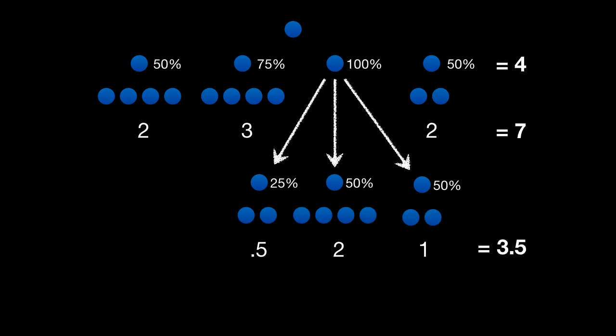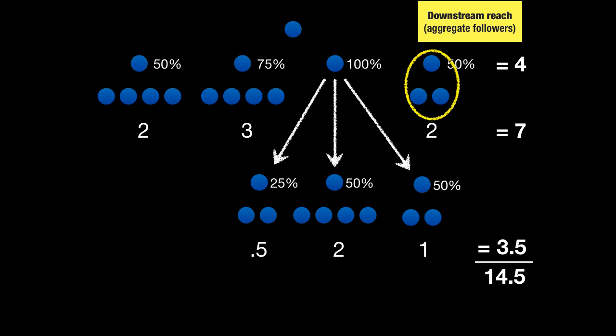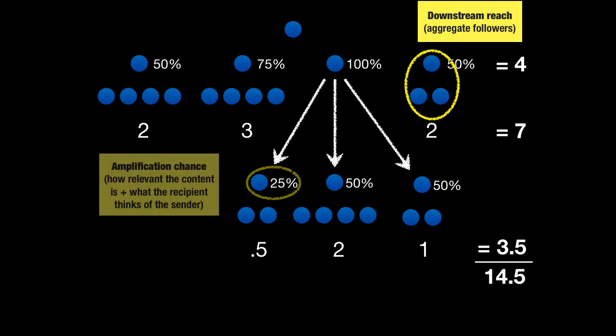And how much a person's message is propagated out to their network is a function not only of their downstream reach, how many followers, followers they have, and so on. But also of the amplification chance, how likely the message is to be amplified by others based on its relevance, based on the respect they have for the person they're following, and so on.